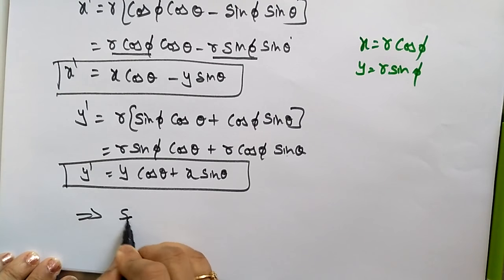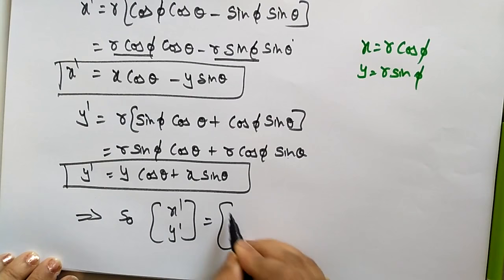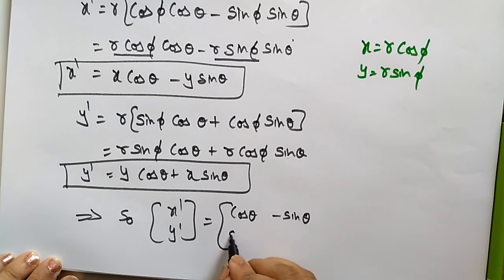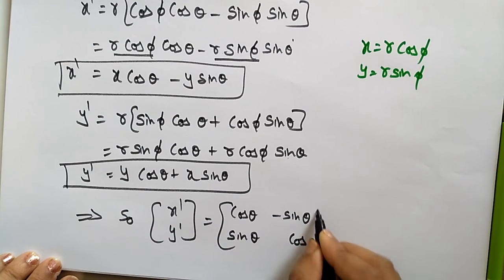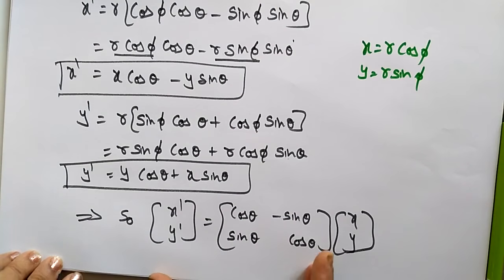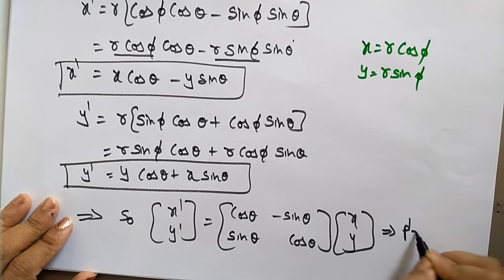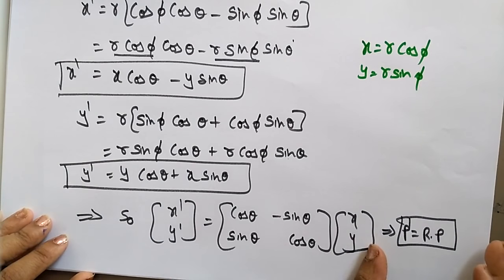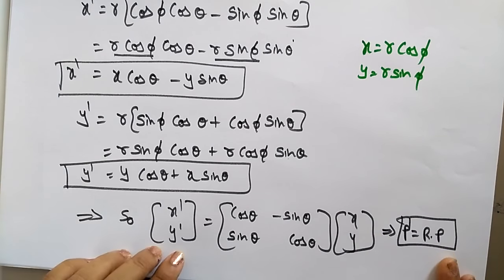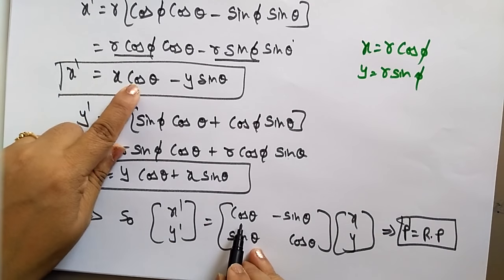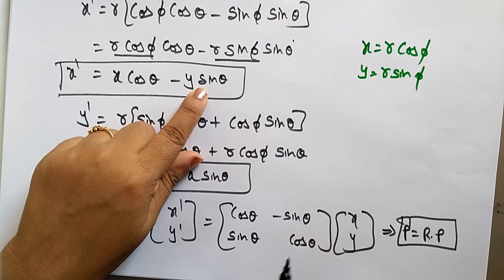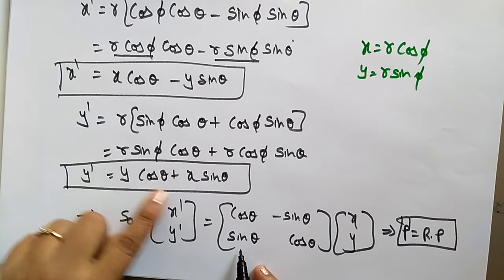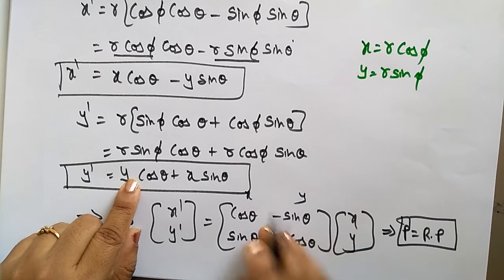Finally, the rotation formula in matrix form is: [x', y'] = [cos(theta), −sin(theta); sin(theta), cos(theta)] · [x, y]. This can be written as P' = R · P, where R is the rotation matrix with cos(theta) and −sin(theta) in the first row and sin(theta) and cos(theta) in the second row.